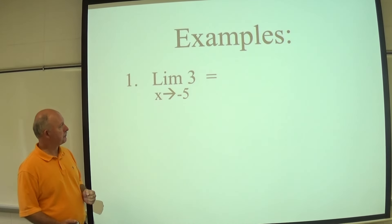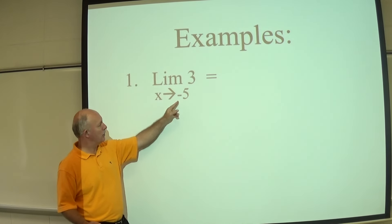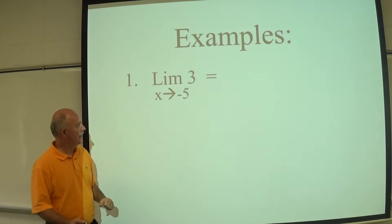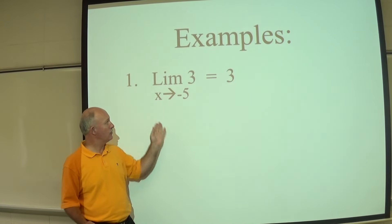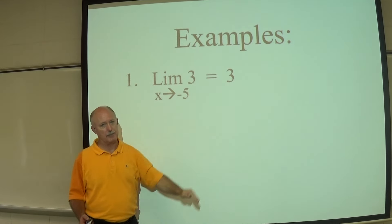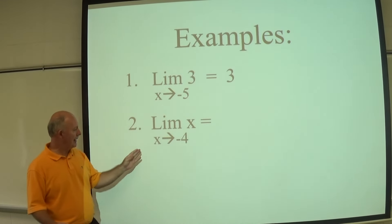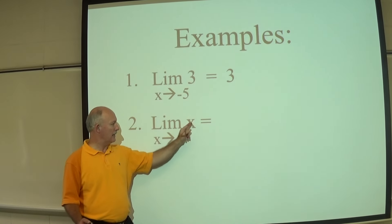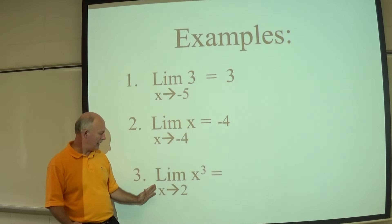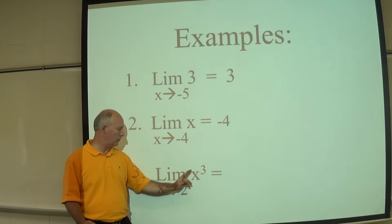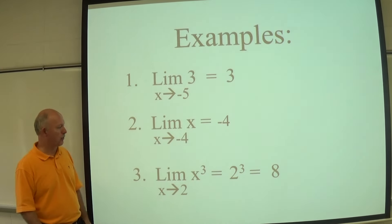Let's look at some examples. The limit as X approaches negative 5 of 3 is 3, because Y equals 3 is always 3 no matter what X approaches. The limit as X approaches negative 4 of X: substitute negative 4 in for X, giving negative 4. And the limit as X approaches 2 of X cubed: substitute 2 in for X, giving 2 to the third power, which is 8.